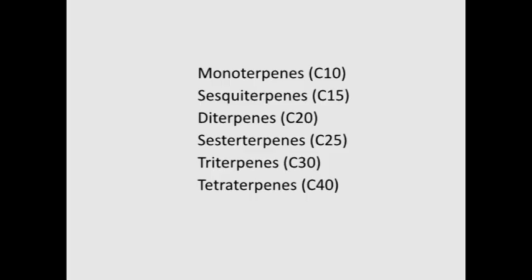Terpenoids are classified by the number of 5-carbon units present in the core structure as: monoterpenes containing 10 carbon atoms, sesquiterpenes containing 15 carbon atoms, diterpenes containing 20 carbon atoms, sesterpenes containing 25 carbon atoms, triterpenes containing 30 carbon atoms, and tetraterpenes containing 40 carbon atoms.